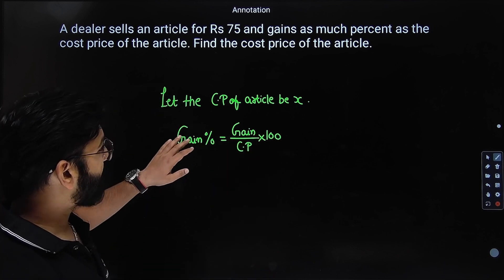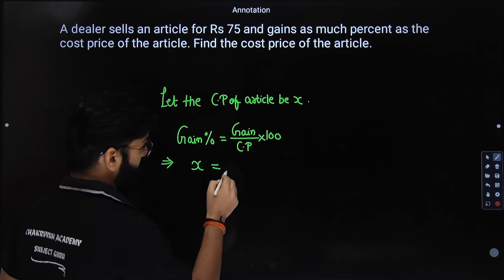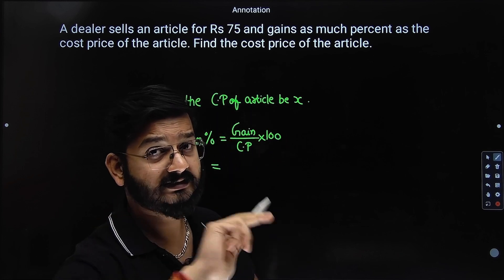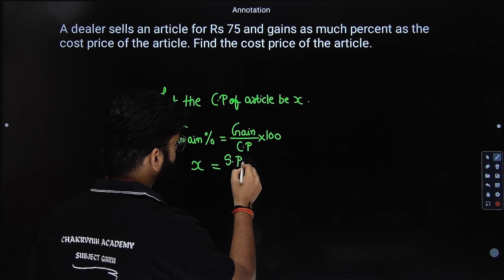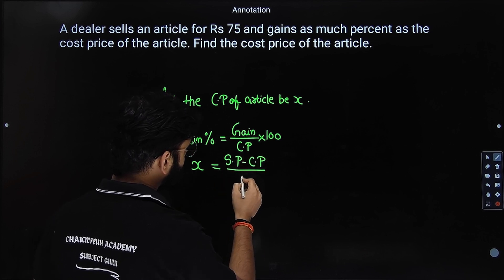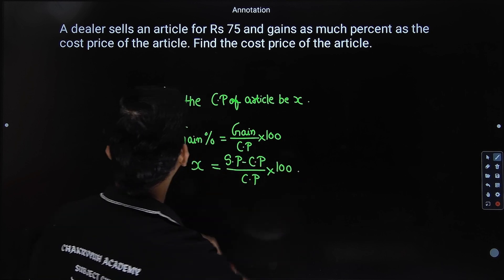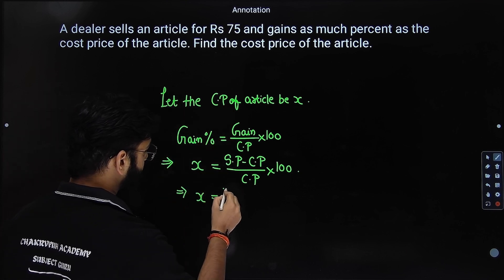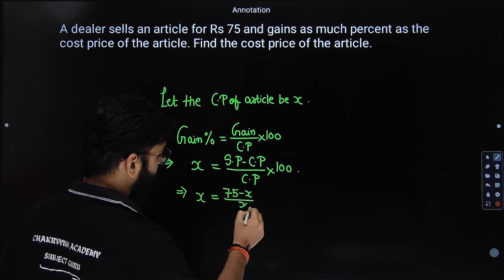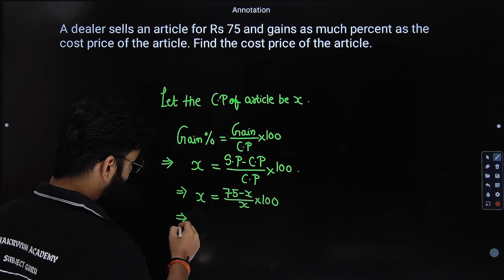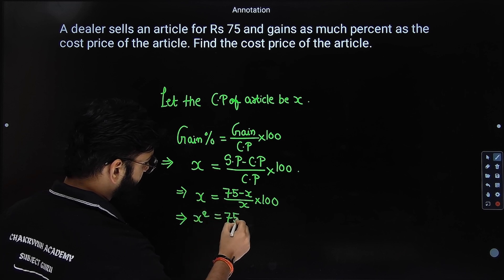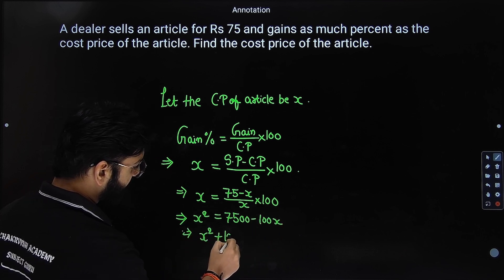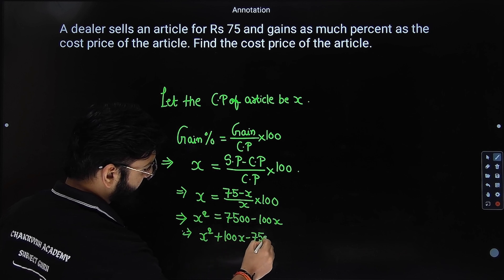So what is the gain percentage? It is exactly same as the cost price of the article, so this will be x. What is profit? If it is profit, it means your selling price should be more than cost price. So it should be SP minus CP. So you will say SP minus CP divided by CP into 100. The dealer sells the article for 75 rupees, so 75 rupees is the SP. So x will be equal to 75 minus x by x into 100. Let us cross multiply. So this will be x square equal to 7500 minus 100x. If you rearrange the terms, we have a quadratic equation: x square plus 100x minus 7500 equals to 0.